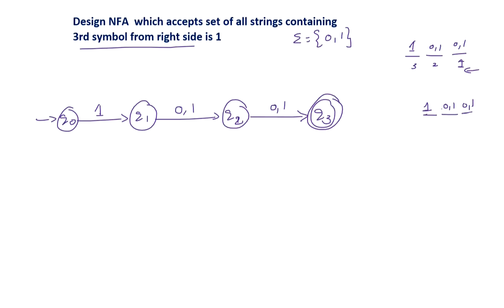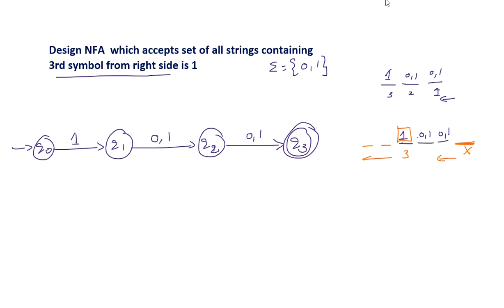The fourth and fifth symbols from the right have no restriction, meaning the string can grow to the left. However, if we add symbols to the right of the pattern, 1 is no longer the third symbol from the right. So we should not put any loop on Q3 — the string can only grow to the left, implemented as a self-loop on Q0 with symbols 0 and 1.